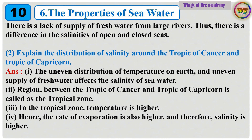Question 2: Explain the distribution of salinity around the Tropic of Cancer and Tropic of Capricorn. Answer: The uneven distribution of temperature on Earth and uneven supply of fresh water affects the salinity of seawater. The region between the Tropic of Cancer and Tropic of Capricorn is called the tropical zone. In the tropical zone, temperature is higher; hence the rate of evaporation is also higher, and therefore salinity is higher.